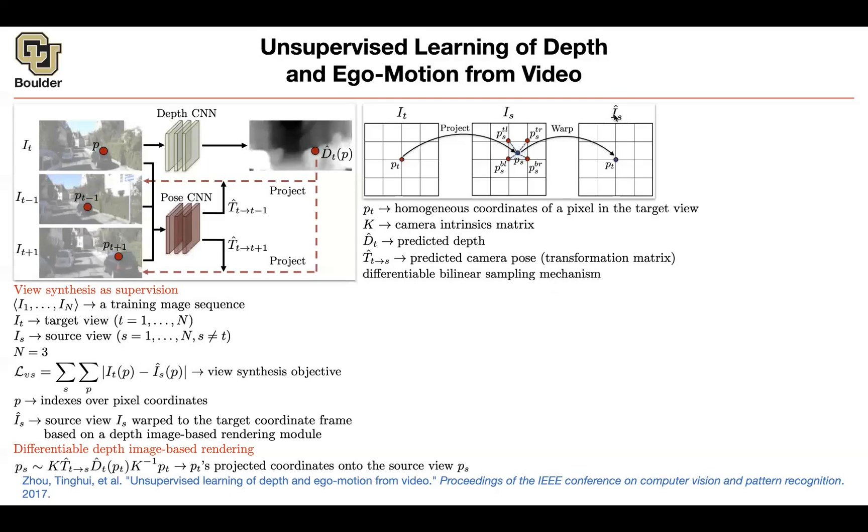Now what did just happen? Now you have a warped image, which should be able to be comparable to the original image, to the target one. So this is your source image warped in the space of the target image. Any questions so far?